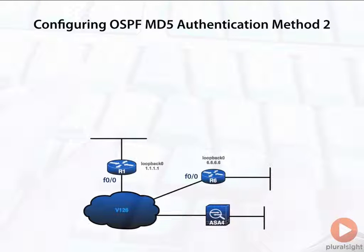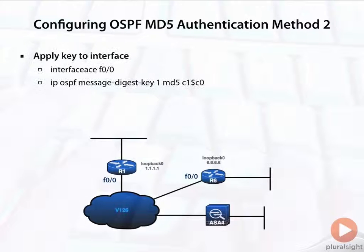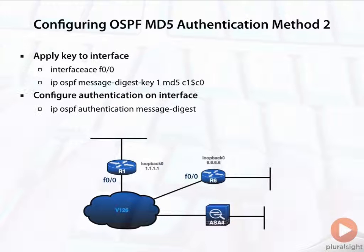The second method is, just as we saw with plain text authentication, configuring it on a per-interface basis. We apply the key to the interface with IP OSPF message digest key, and then configure authentication on the interface using IP OSPF authentication message digest. That's how we configure authentication on the interface. Let's go ahead and move on into our demonstration.